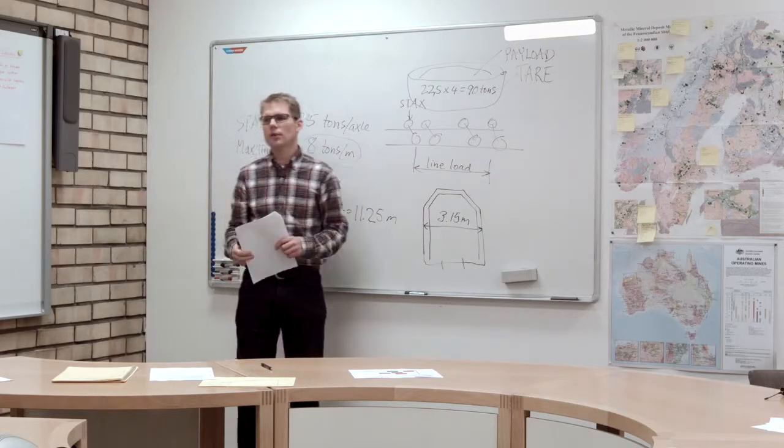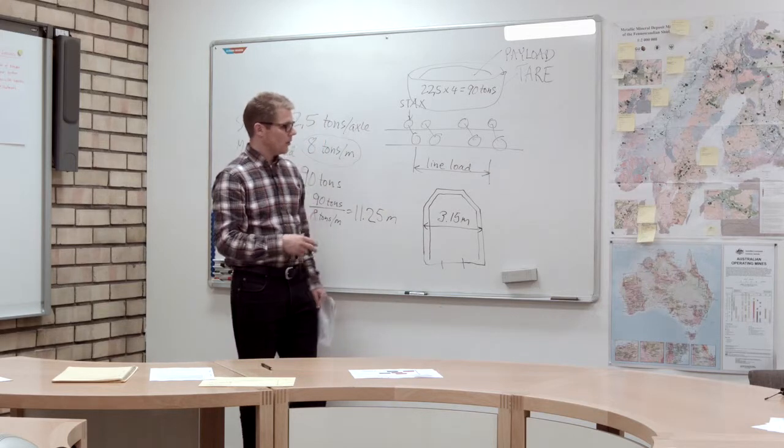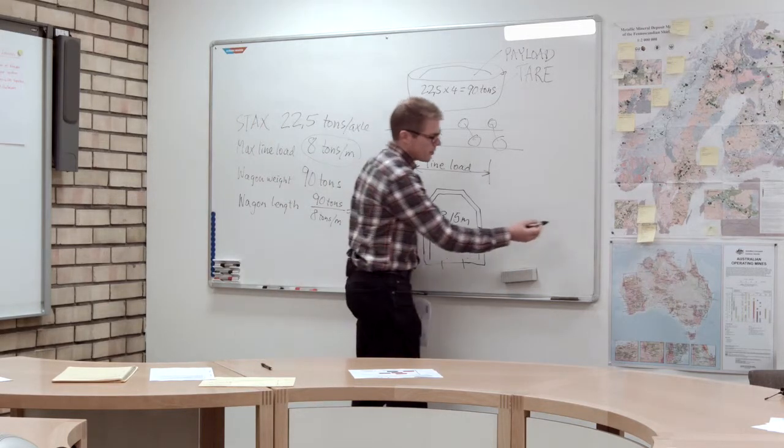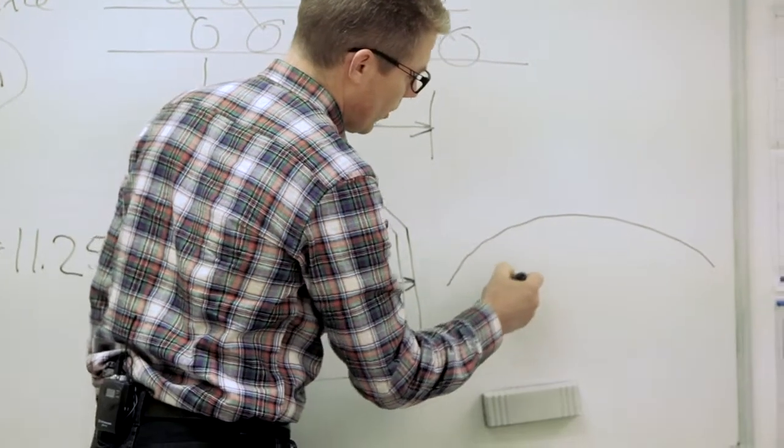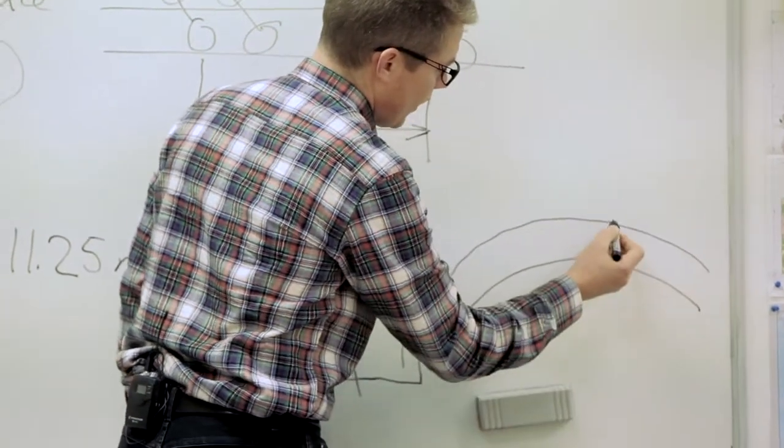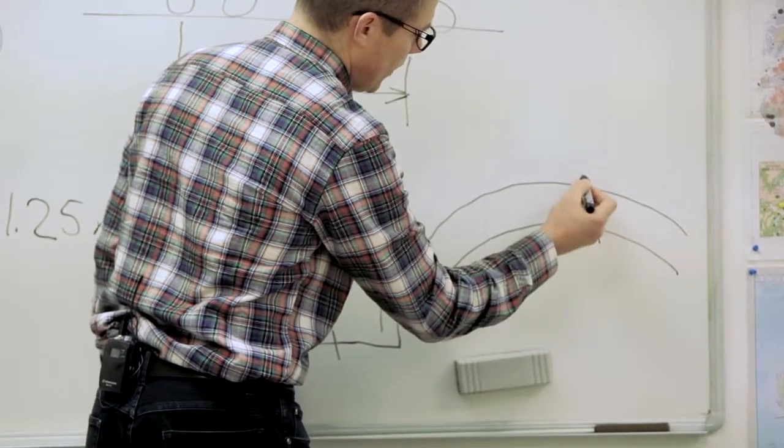go through a curve like this and you have a very long wagon, it will come a lot more outside the railroad in the middle of the wagon.